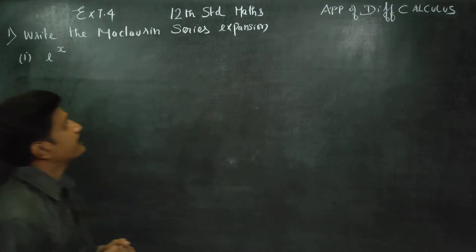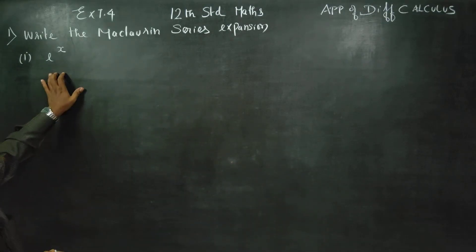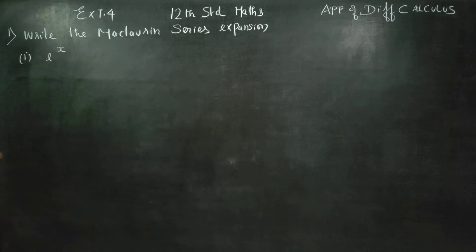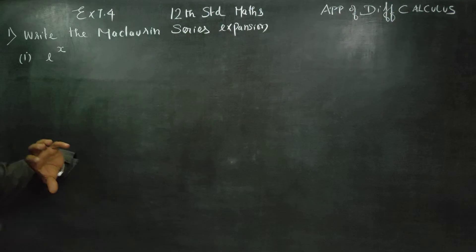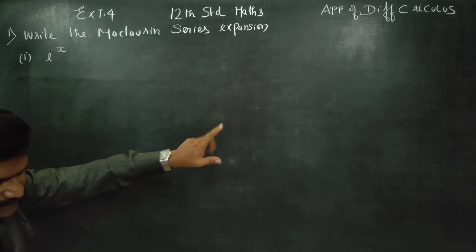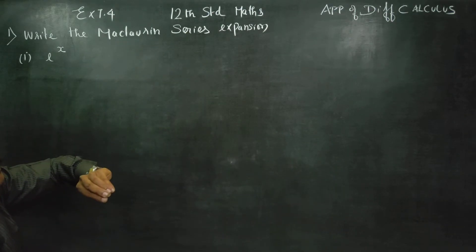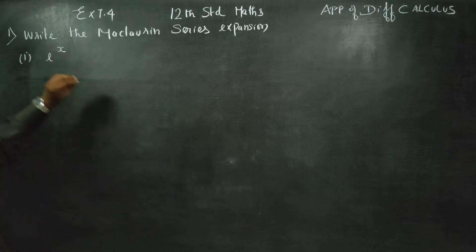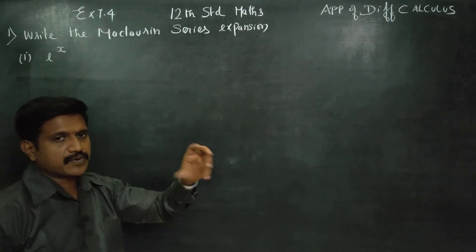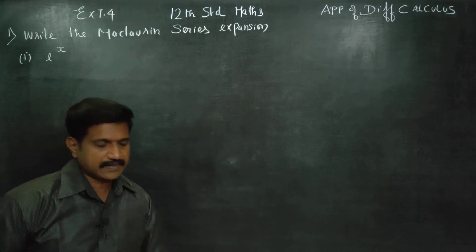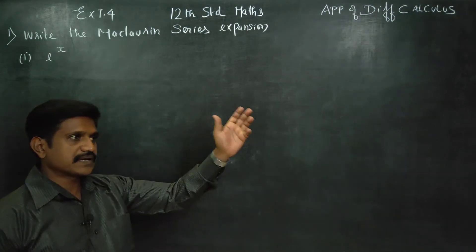we are going to today expand this function using Maclaurin series — the e power x function. It is a very simple function. You can see the graph, with e power 5, e power 2, e power minus 3 values created in the graph.